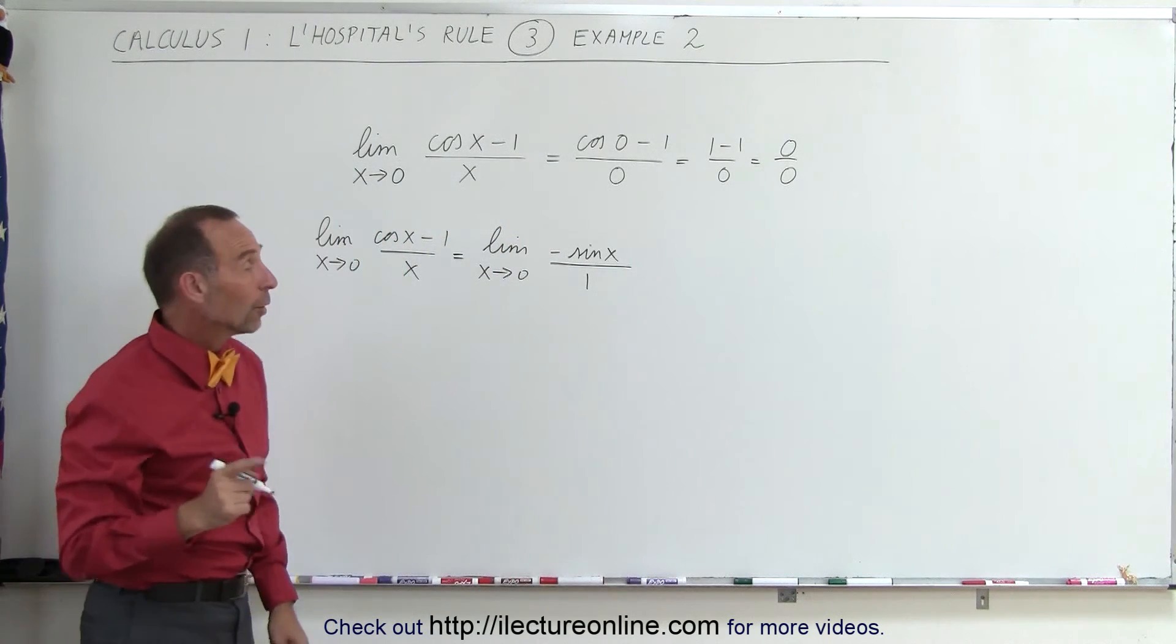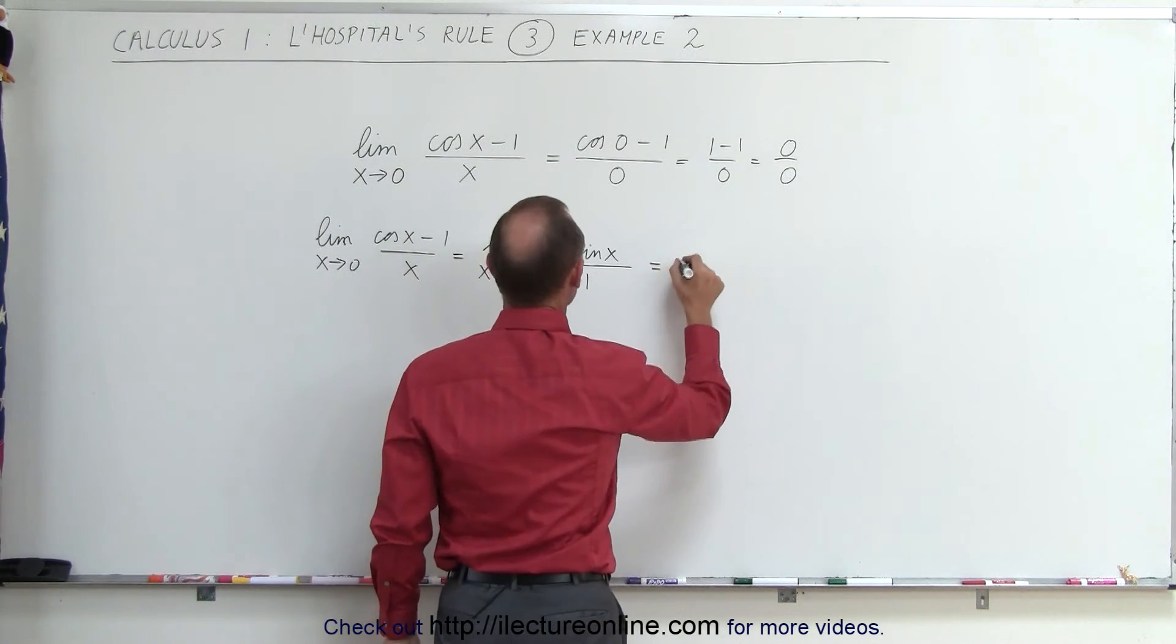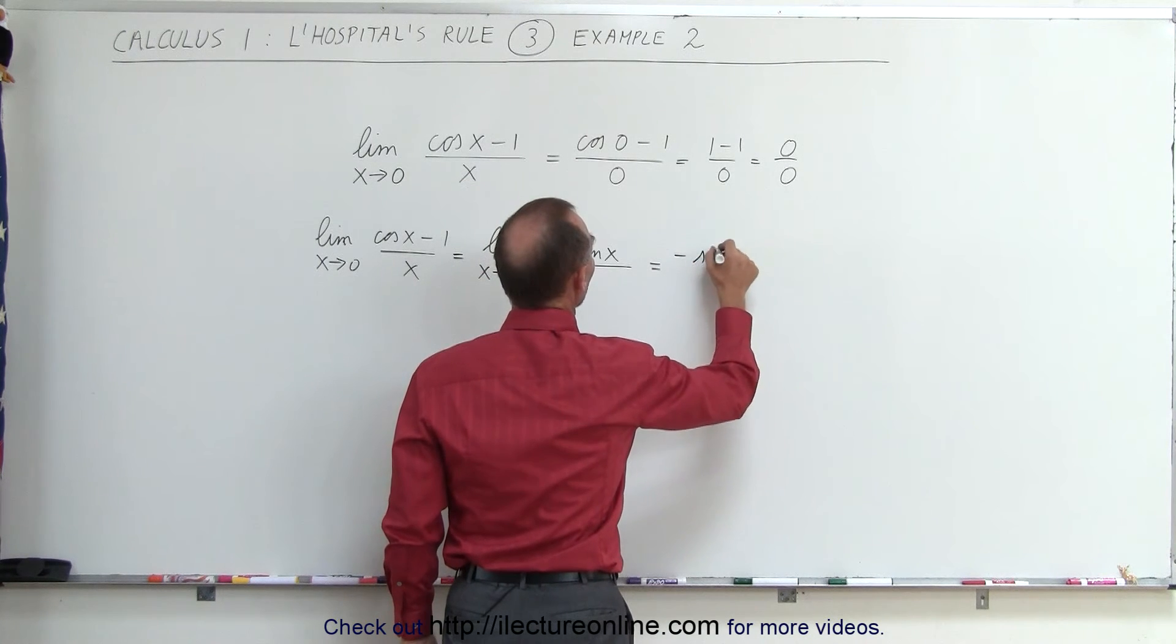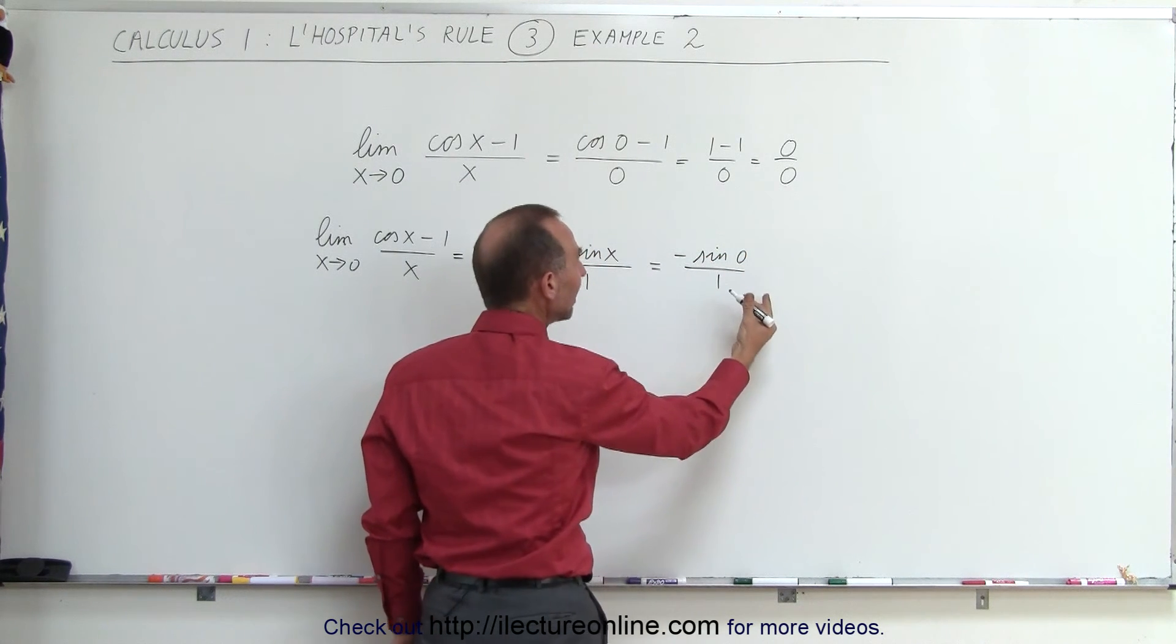Now when we have that we can go ahead and plug in the limits and see what we get. So this is equal to minus the sine of 0 divided by 1, and of course the sine of 0 is 0.